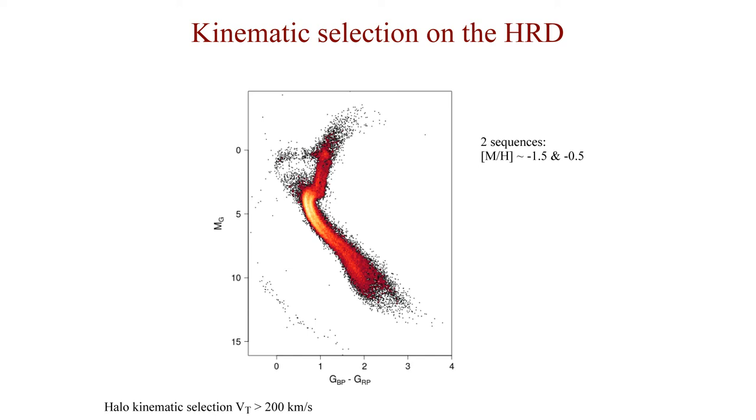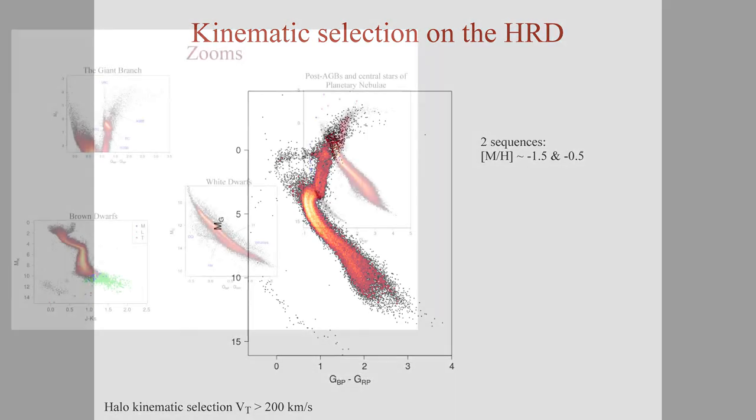And in particular, for the classical halo cut, we see for the first time a very clear split of the HR diagram into two different sequences, very thin sequences, that we associate through isochron fitting to a difference of about one dex in metallicity, which is in agreement with recent results from spectroscopic surveys.